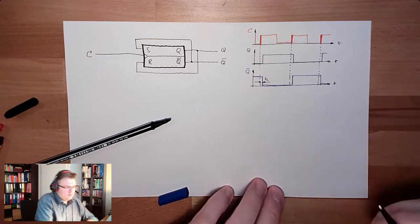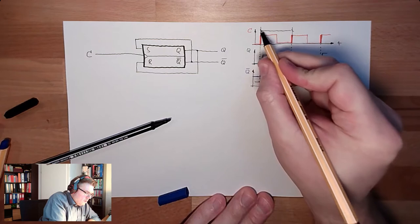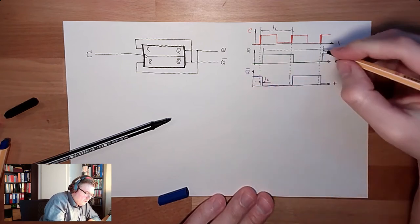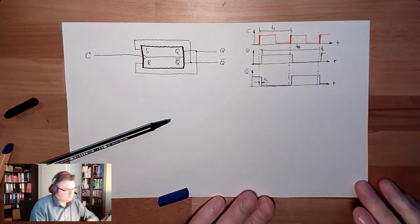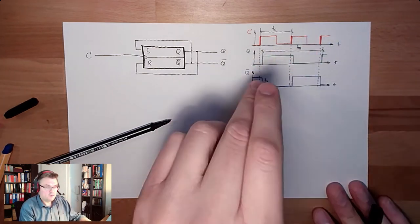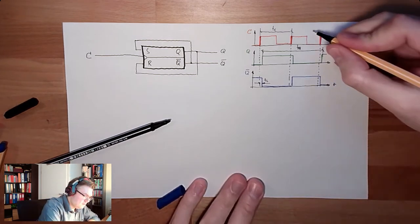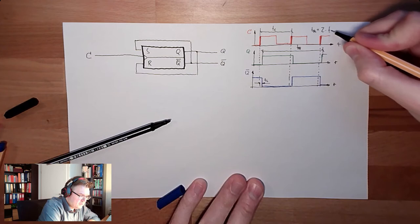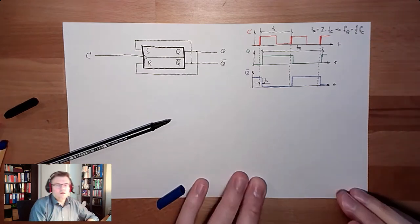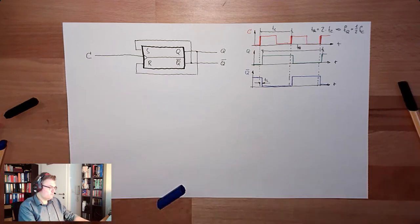This is how this would look like. So, here we have a period time of the clock signal. And here we have a period time of the memory, TQ. And, as we can see, Tc must change two times. Two times rising edge. Then, we are at the beginning again. So, TQ is twice as high as Tc. TQ is two times Tc. This means the frequency of Q is only half the frequency of the clock signal. So, this can be used as frequency divider. Frequency divider.